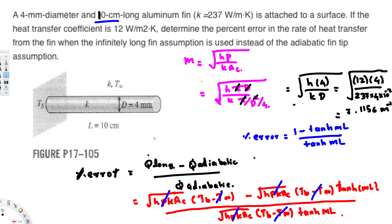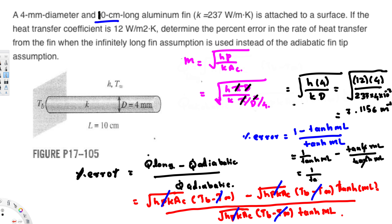Now we can calculate the percentage error. We can also simplify the expression further: 1/tanh(mL) − 1, which is equivalent to what we had before.